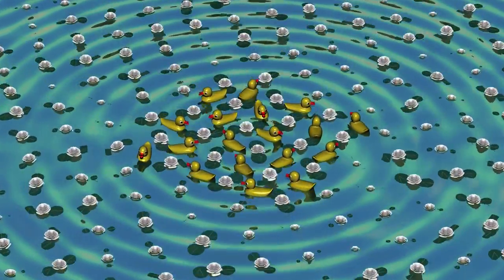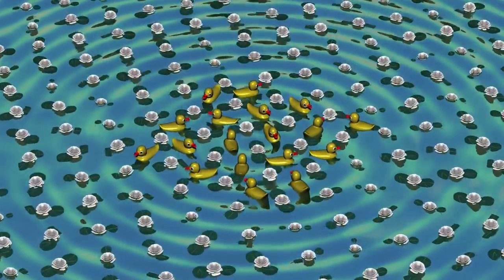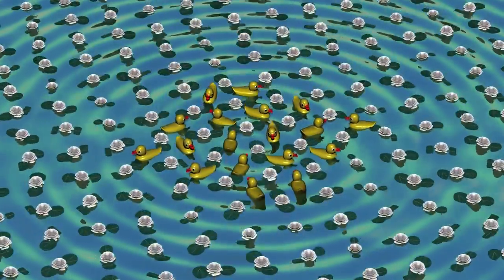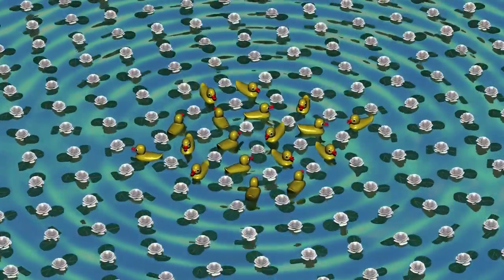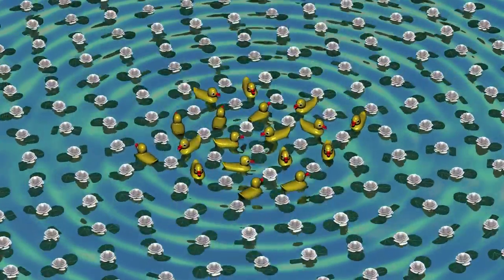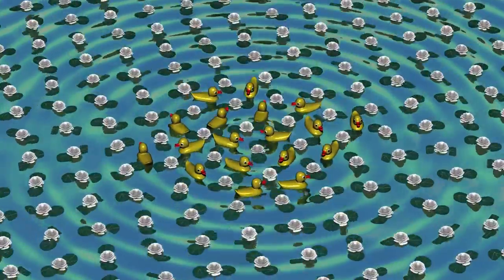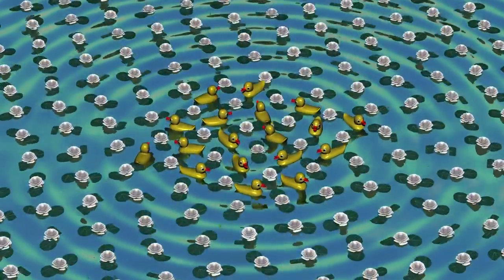See the ducks eating the water lilies. When there are only a few ducks, then they eat only a few lilies. The water lily population therefore grows rapidly. When there are a few ducks and many water lilies, the ducks are well fed and their number increases.